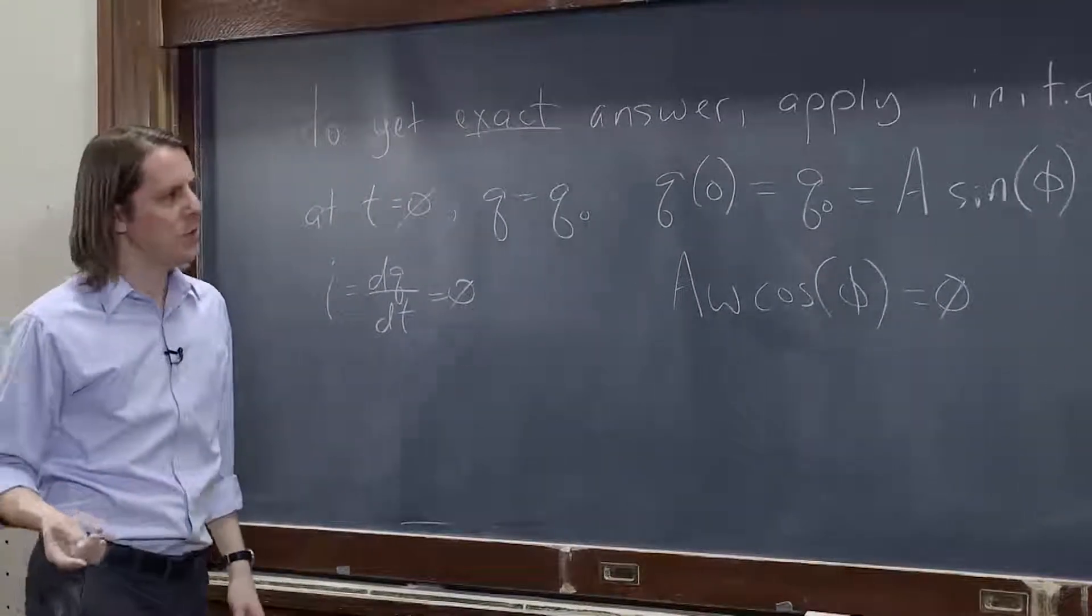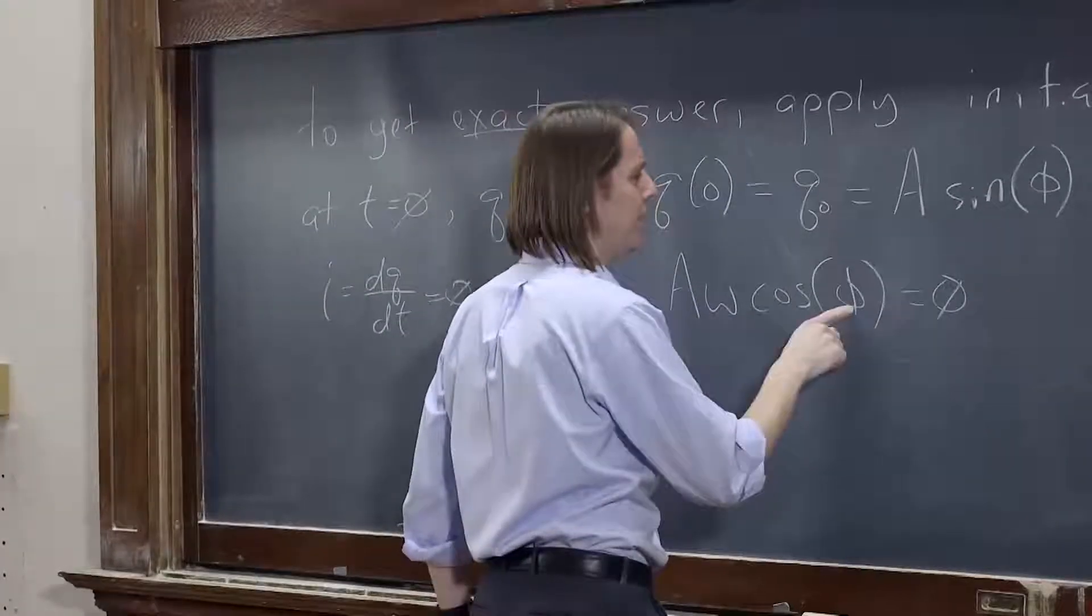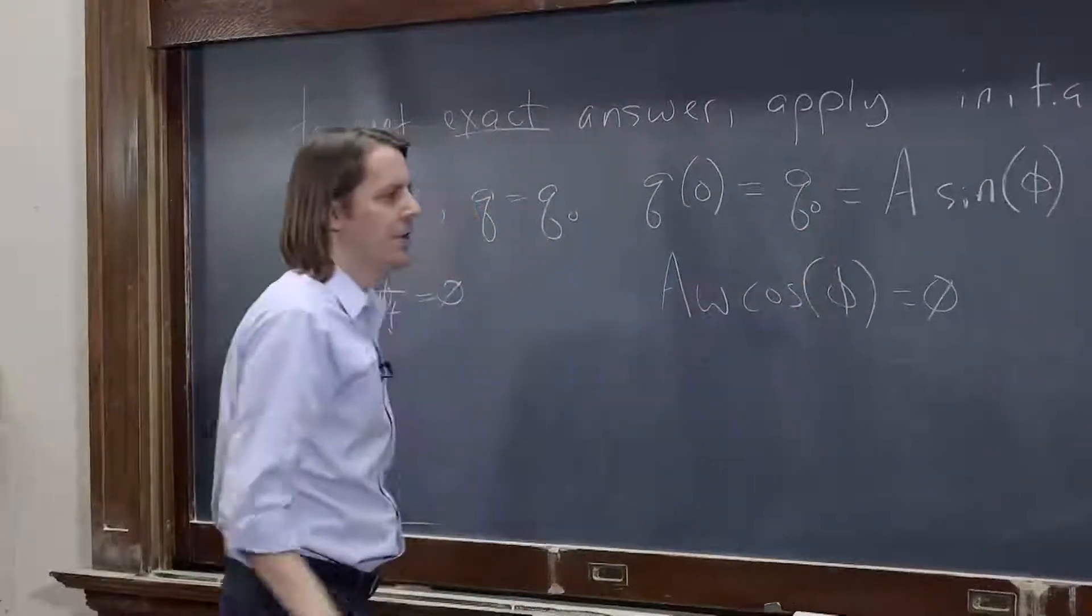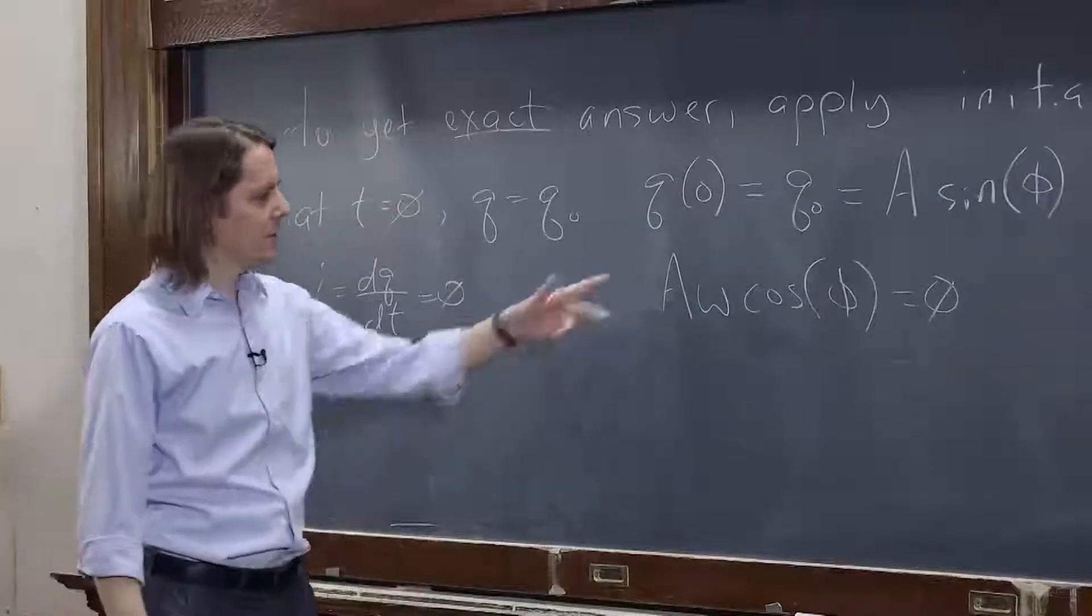So now we actually have two equations, two unknowns. We don't know a. We don't know phi. But we have two equations.